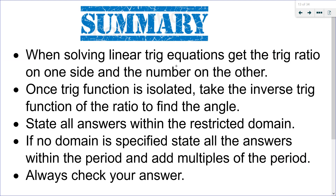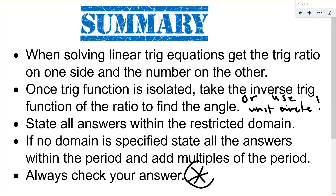To summarize: when solving linear trig equations, get the trig ratio on one side and the number on the other. Once it's isolated, take the inverse trig function of the ratio to find the angle, or use your unit circle for exact values. State all your answers within the domain; if no domain is specified, find a general solution from 0 to the period, adding on multiples of the period. The most important step is always the check — no point doing a question if you're not going to verify you're right.